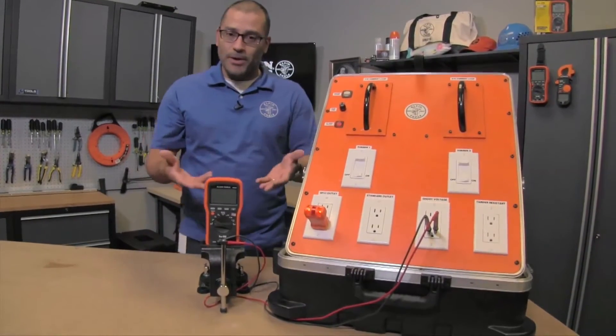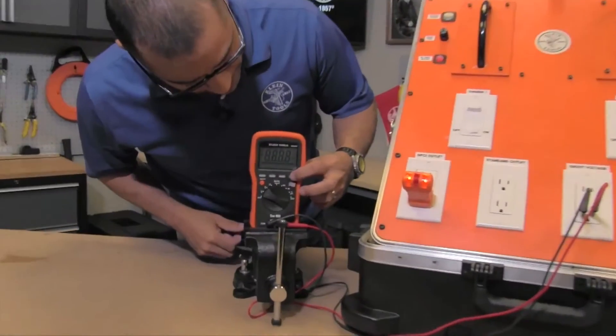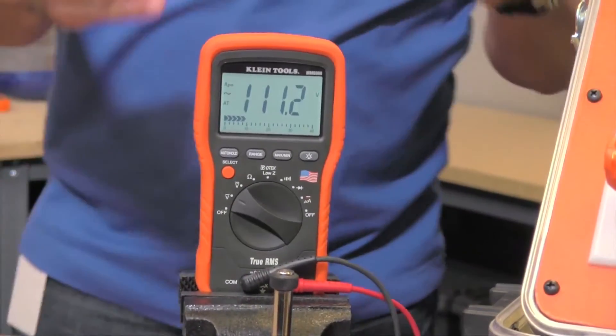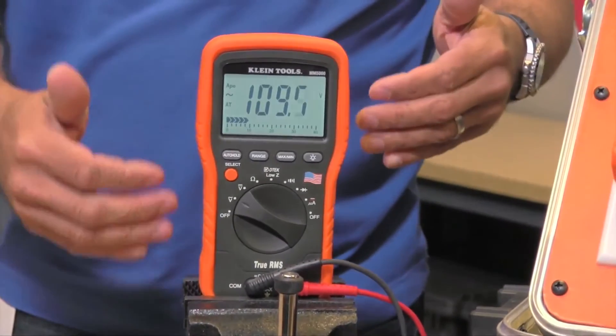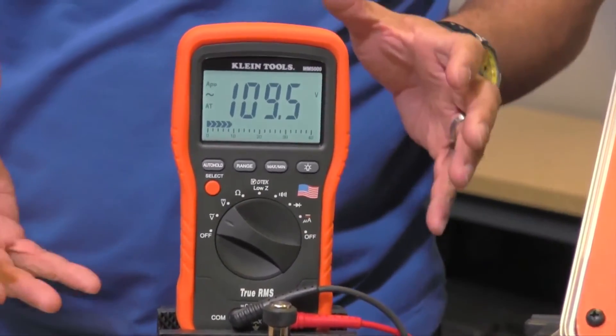So your first step is to grab your multimeter, you put it into voltage mode, and you plug into your outlet. Now right now this meter is set up in high impedance mode. You just turn it to voltage, that's high impedance, that's kind of how most multimeters are.